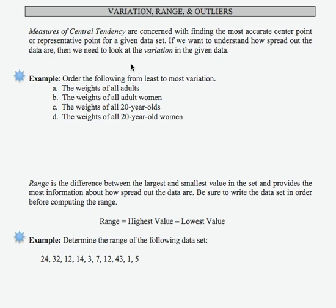In our first example, we're asked to order the given items from least to most variation. So let's start with the first item, the weights of all adults. All adults in the entire world, basically, would be a very large population and a lot of variability.